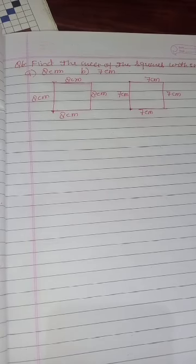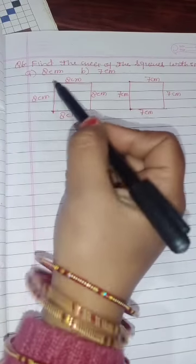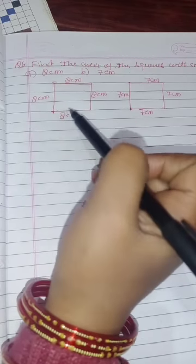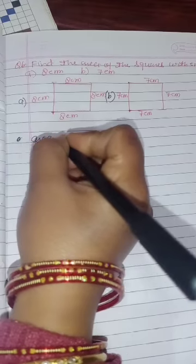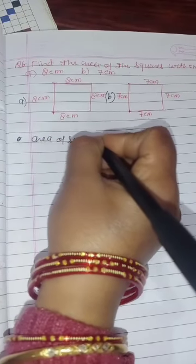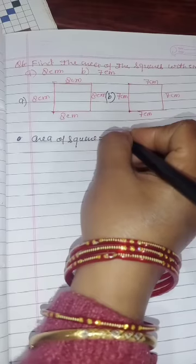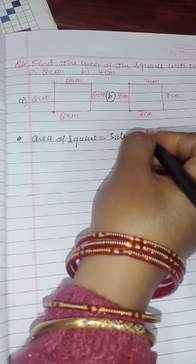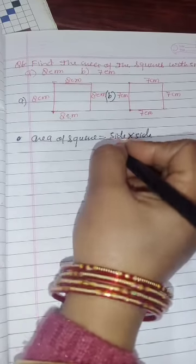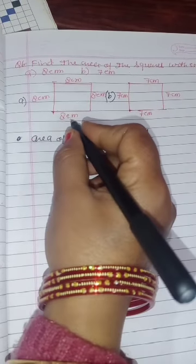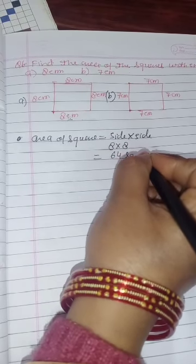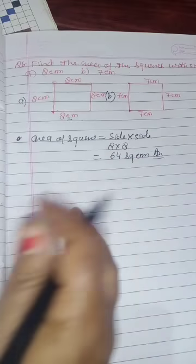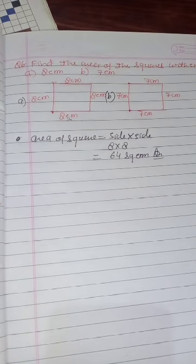Question five, part (a): find the area of a square with side 8 cm. Area of square = side × side = 8 × 8 = 64 square centimetres. Part (b) — side 7 cm — you will do yourself.